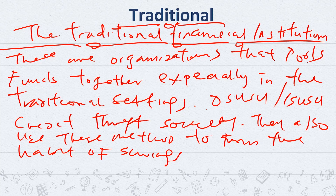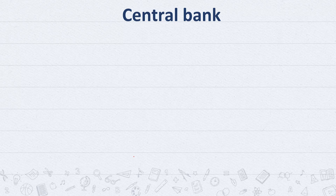Another way the traditional financial institution exists is that members save money together for the purpose of giving loans to members of the public, or to encourage their members to form the habit of savings. So in this regard, traditional financial institutions could naturally exist in these forms.